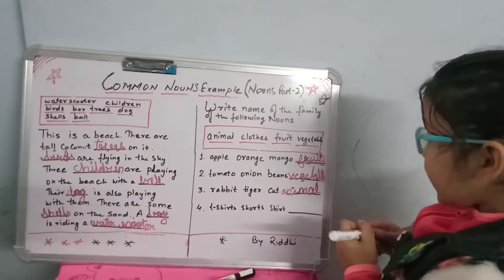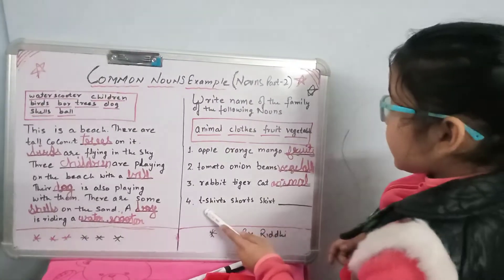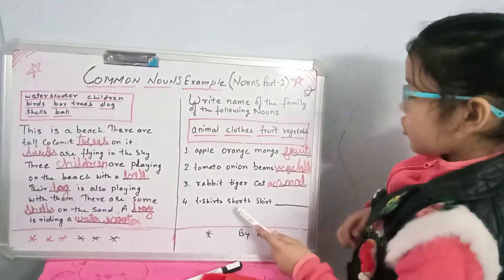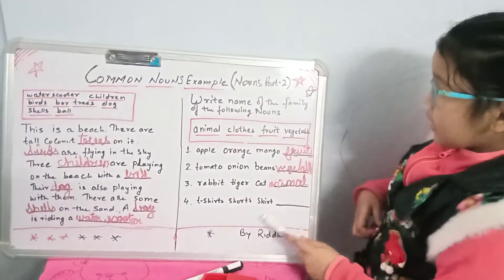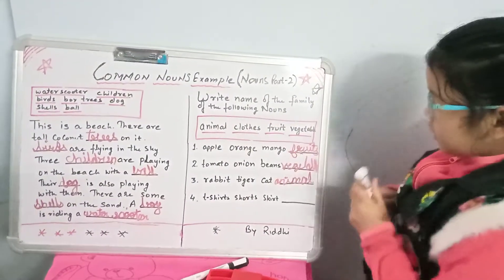The fourth one is t-shirts, shorts, skirts. These are clothes.